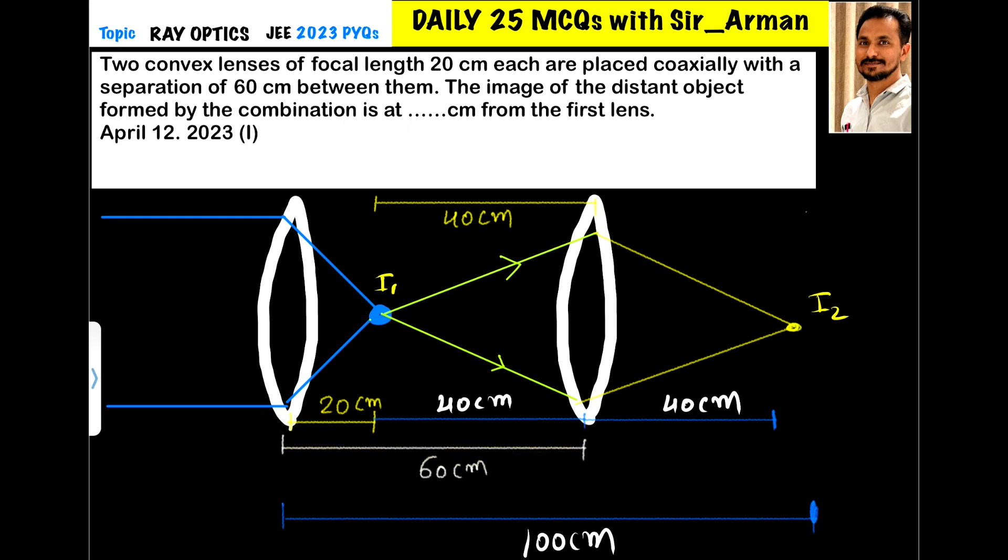The image of the distant object formed by the combination is at... so where will the image form? Now we know that the parallel rays, let us assume from the distant object, the rays are coming parallel to the principal axis.